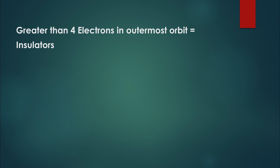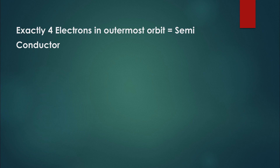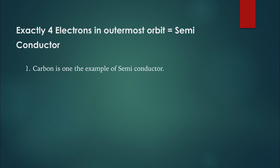If the atom has more than 4 electrons in its outermost orbit, the material can be used as an insulator. Nitrogen is one example of an insulator, which has 5 electrons in its outermost orbit. If the atom has exactly 4 electrons in its outermost orbit, the material can be used as a semiconductor, which has properties of both metal and nonmetal. So by knowing how many electrons are in the outermost orbit, you also know whether a material can be used as a conductor, insulator, or semiconductor.